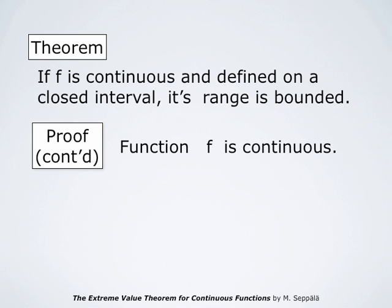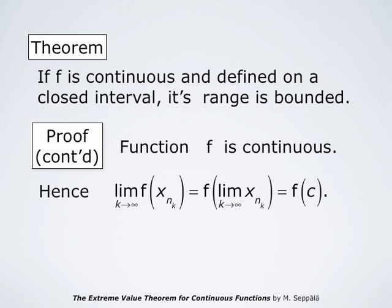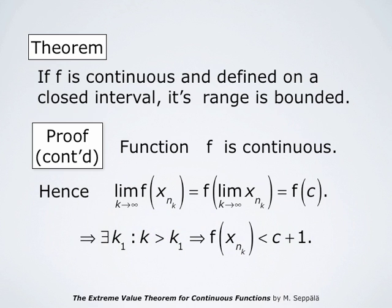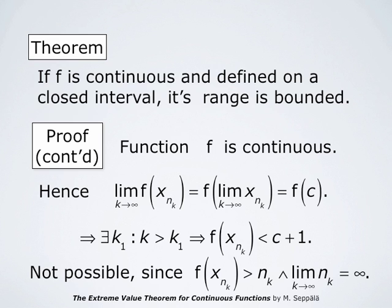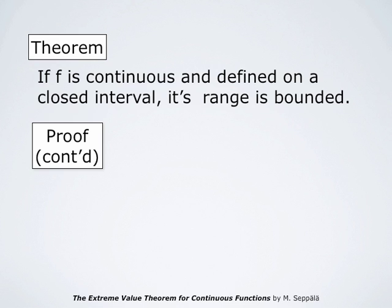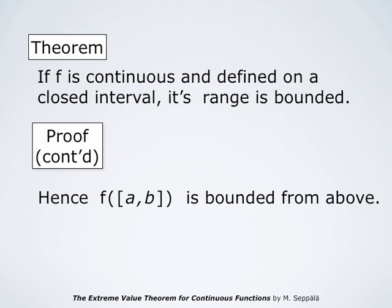The function f is continuous — that was our assumption. Therefore, the limit as k approaches infinity of f evaluated at x_{n_k} equals f evaluated at the limit point c. By the definition of limits, there is an index k_1 such that whenever k is larger than k_1, then f at x_{n_k} is less than c plus 1. But this is not possible since we assumed that f at x_{n_k} is larger than n_k and the limit of n_k as k approaches infinity is infinity. So the set of values of f is bounded from above.